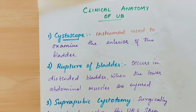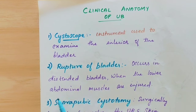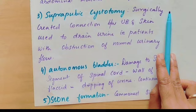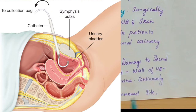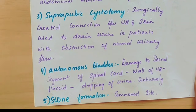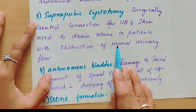Second point: rupture of the bladder. If the bladder is full and the muscles are very distended, a big trauma to the lower abdominal wall can cause the bladder to rupture. This occurs in a distended bladder when the lower abdominal walls are injured. Third point: suprapubic cystotomy. This is a surgical procedure where a tube is inserted through the skin directly into the urinary bladder so that urine can drain through the tube. It is used in cases of prostate cancer, neck of the urinary bladder obstruction, or urethra damage — surgically creating a connection between the urinary bladder and skin to drain urine in patients with obstruction of normal urinary flow.